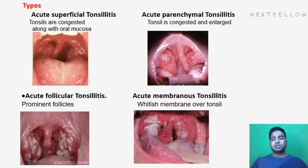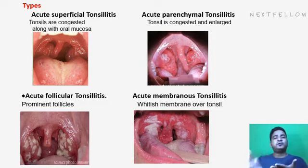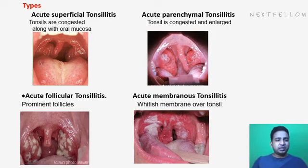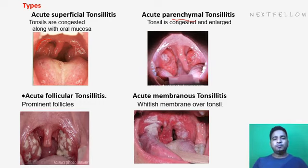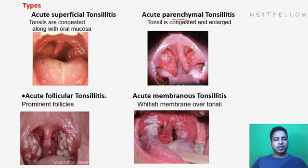The first type is acute superficial tonsillitis, where the superficial layer of the tonsillar tissue is severely inflamed — seen as a completely red uvula, red anterior pillar, and congested tonsils. The second type is acute parenchymal tonsillitis, where the complete tissue of the tonsil is involved; the tonsillar tissue appears enlarged, inflamed, and swollen.